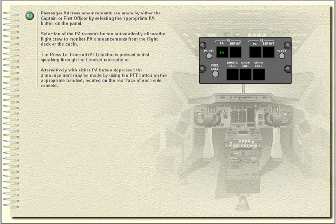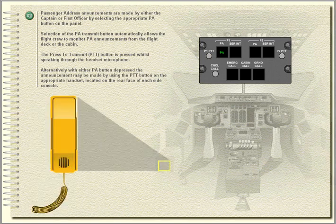Alternatively, with either PA button depressed, the announcement may be made by using the press-to-transmit button on the appropriate handset, located on the rear face of each side console.